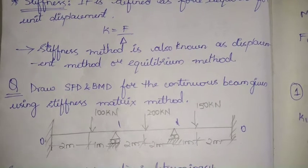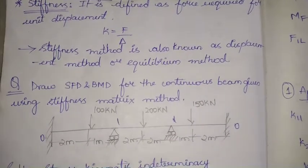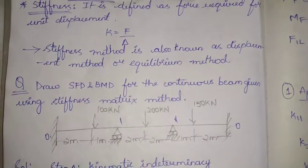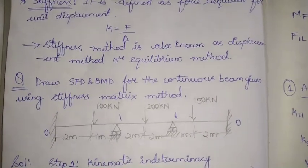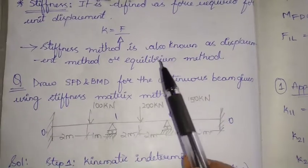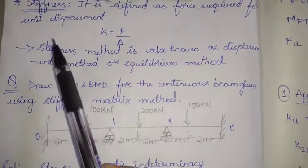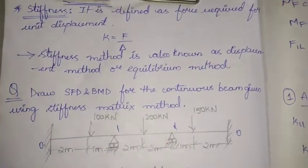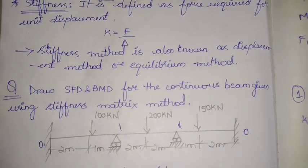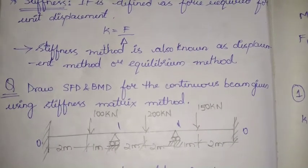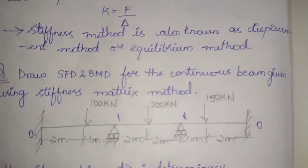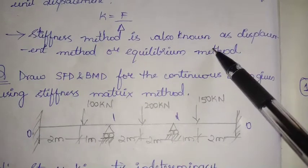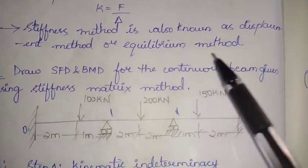Welcome to this video where we are learning about the stiffness matrix method of analyzing a continuous beam. Stiffness is defined as the force required for unit displacement, denoted by k, where k equals F divided by delta. The stiffness method is also known as the displacement method or equilibrium method.